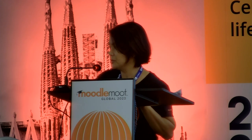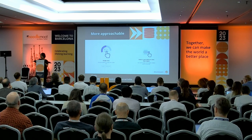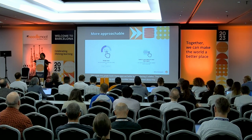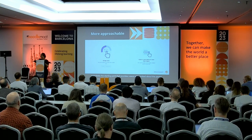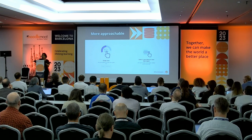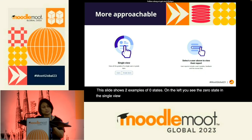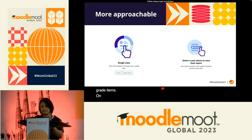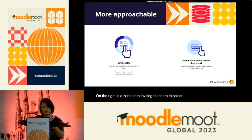Firstly, we made the gradebook more approachable by introducing zero states — essentially the starting point that provides users with context about the page they're on and outlines the typical actions expected. This slide shows two examples: on the left, the zero state in the single view report where a teacher can choose to navigate students and grade items; on the right, a zero state inviting teachers to select a user to view their individual report.